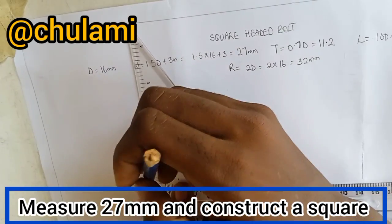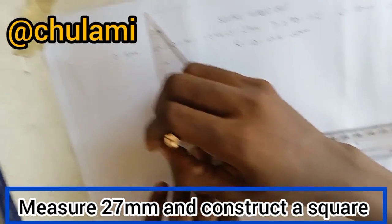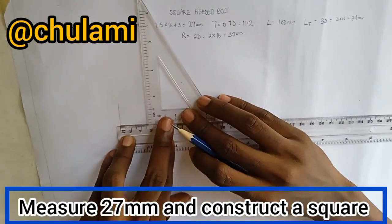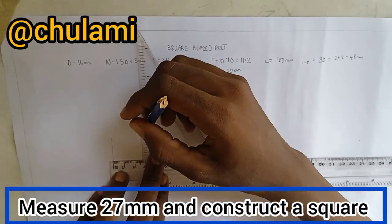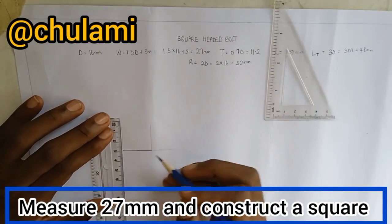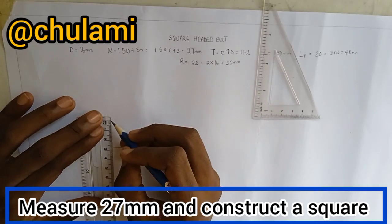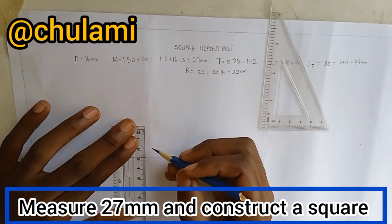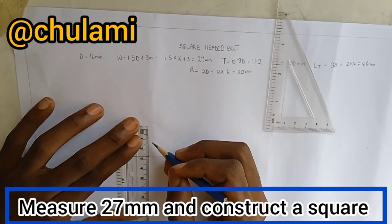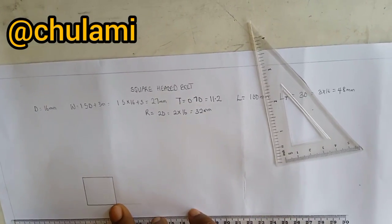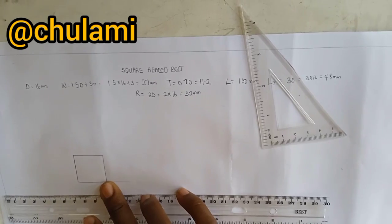But if you don't know how to construct a square, I have other videos. They are in the description part of this video, you can go and learn from it. So I am constructing a square with the same parameter, 27mm. So we have constructed a square of 27mm.